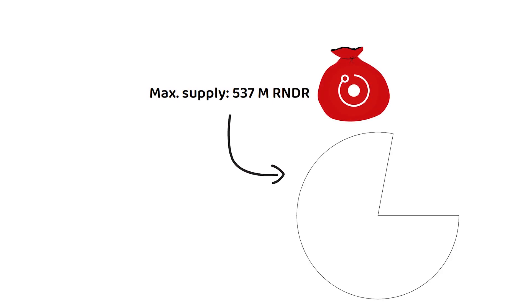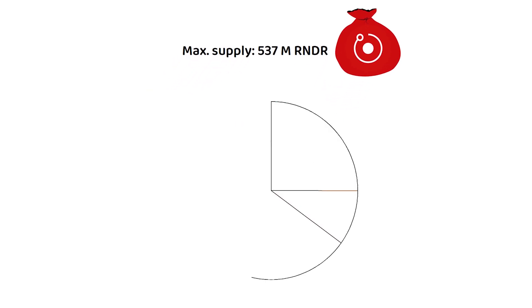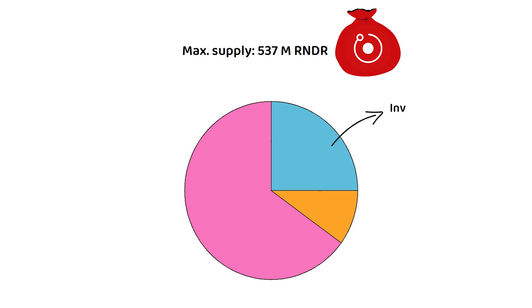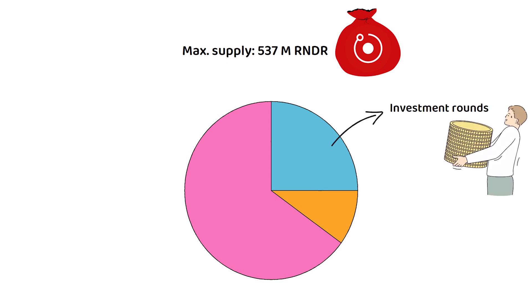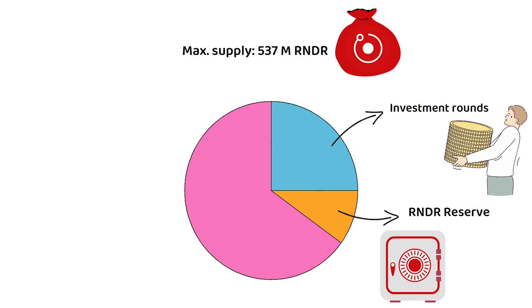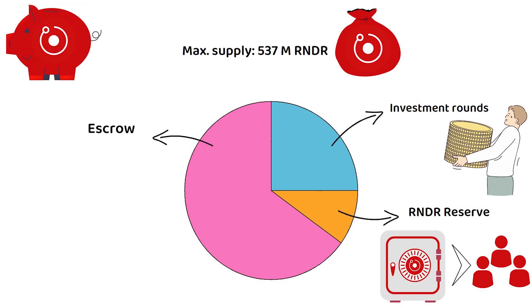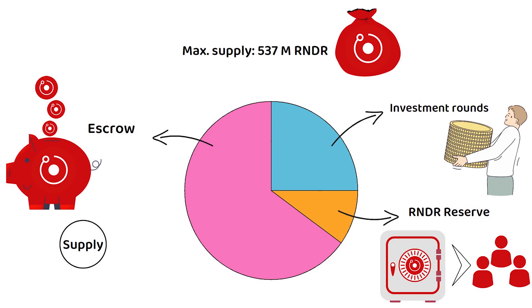In total, just under 537 million Render tokens will be available, with over 117 million making up the current circulation. The total supply breaks down as follows: around 25% was sold during investment rounds; a further 10% is held in the Render reserve, which is a reserve of RNDR tokens — this reserve hasn't been fully allocated yet, but a part of it will be set towards user acquisition. The final 65% is held in escrow through a third-party custody account for the supply and demand flow back to the network.